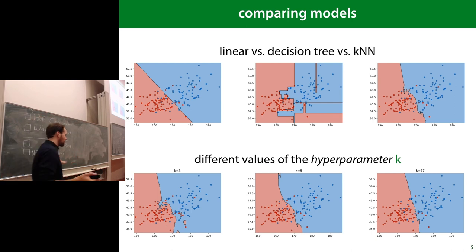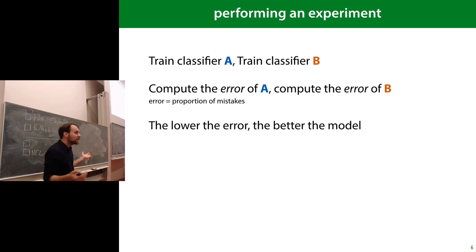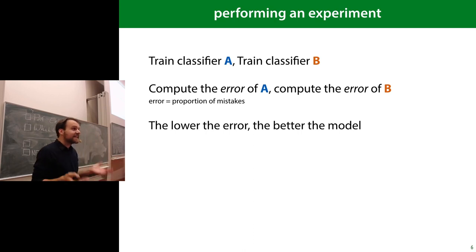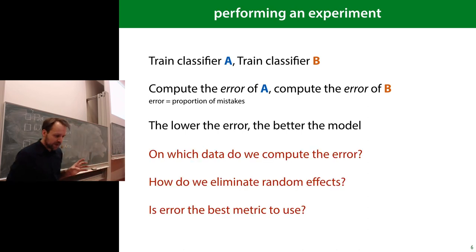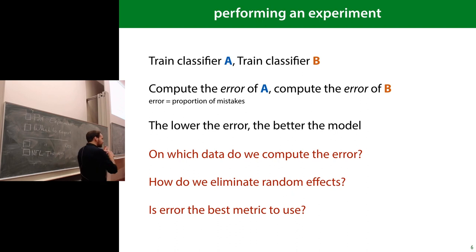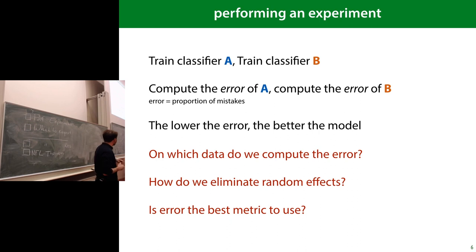A naive approach: train A and train B, compute the error for each, and the one with the lowest error is best. That's not far from what we normally do. But there are a couple of questions to be careful about: on which data do you compare the error? How do you eliminate random effects — is the error due to a fundamental property of the classifier, or just randomness? And is error a good metric, or are there other metrics we should look at?